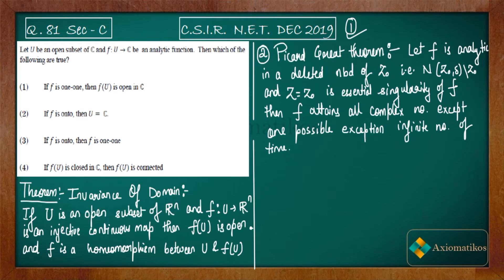Picard's Great Theorem states: if f is an analytic function in a deleted neighborhood of z₀ — that is, z₀ is an essential singularity of f — then f attains all complex numbers except at most one possible exception. So if a function has an essential singularity, it takes every complex value with at most one exception.